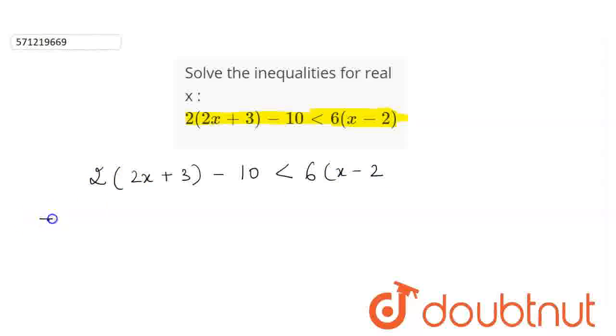Now, if we open the brackets, we get 4x + 6 - 10 < 6x - 12. This gives us 4x - 4 < 6x - 12.